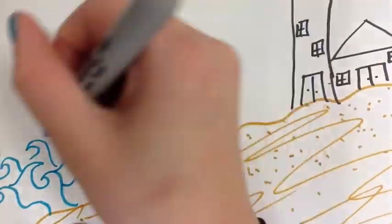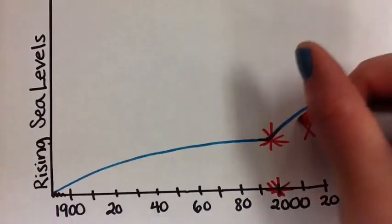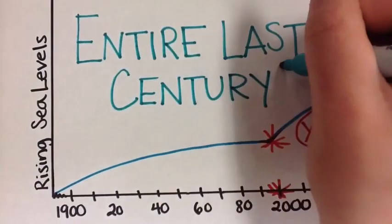Sea levels have risen 17 centimeters in the last century. The rate of rising in the last decade, however, is almost double the rate of the entire last century.